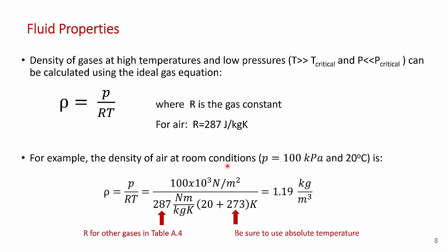For example, if you were trying to calculate the density of air at room conditions — which we know is of order of a kilogram per cubic meter — at around 100 kPa and 20 degrees C, you put in the pressure in pascals (newtons per meter squared), R for air is 287 joules (newton·meters per kilogram·K), and the temperature must be absolute, so you add 273 to get Kelvin. You can calculate that out.